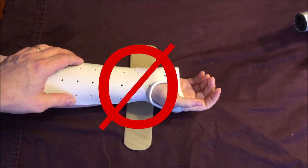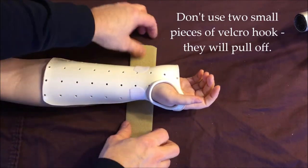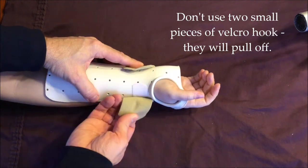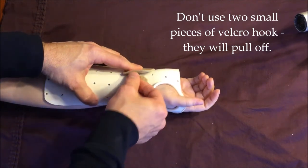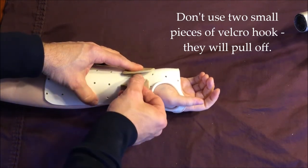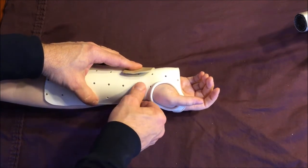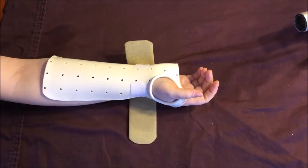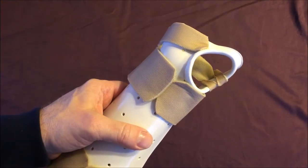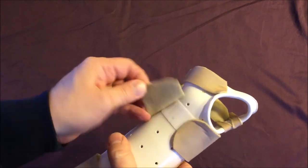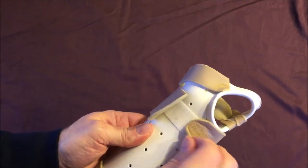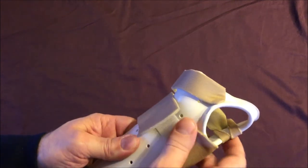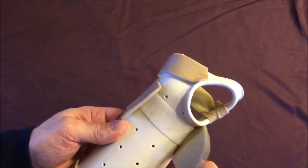One thing that you might be tempted to do to save some velcro is to use 2 small pieces. Avoid that temptation, don't do this, because they will eventually pull off. Every time the client removes the strapping, they're going to be pulling on that proximal edge or medial edge of the velcro hook that's adhered to the orthosis, and eventually it will come off. The way we did it with one long strip is much better, because when you pull the ends of the strapping off the velcro hook, you're not pulling on an end of the velcro, so it can't pull off.